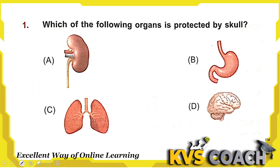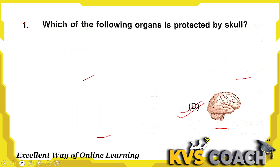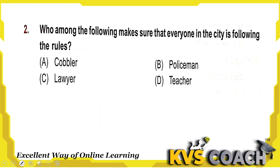First question: which of the following organs is protected by the skull? Skull is part of the skeletal system of our body and is a part of the head. The skull protects the brain. Option D — brain — is the right answer here.